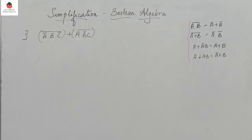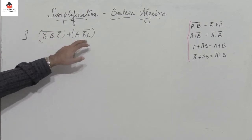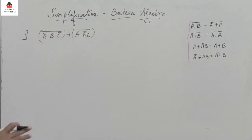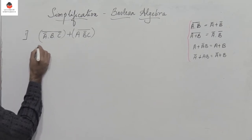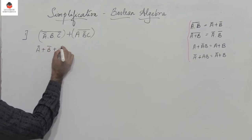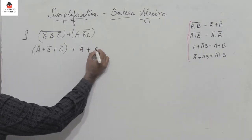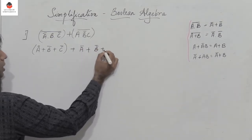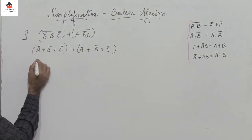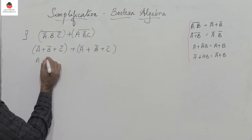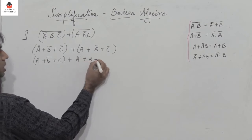First expression: (ā·b·c̄)̄ + (a·b̄·c)̄. Let us apply De Morgan's theorem. This becomes (a double bar + b̄ + c double bar) + (ā + b double bar + c̄), which simplifies to (a + b̄ + c) + (ā + b + c̄).